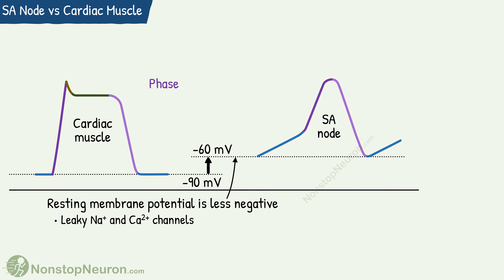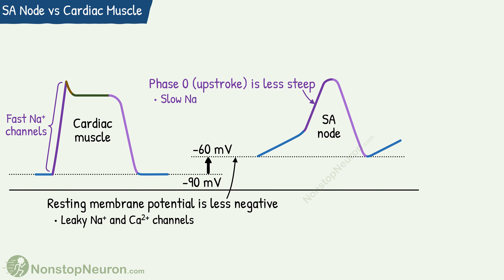The second difference is that phase 0 or upstroke is less steep in the SA node as compared to that in the ventricular myocyte. The reason is this upstroke is produced by fast sodium channels in myocytes, whereas it's produced by slow sodium and calcium channels in the SA node.